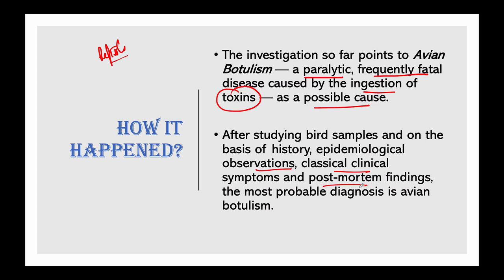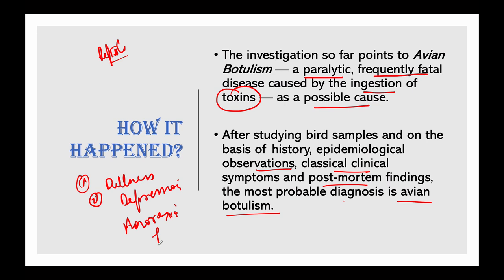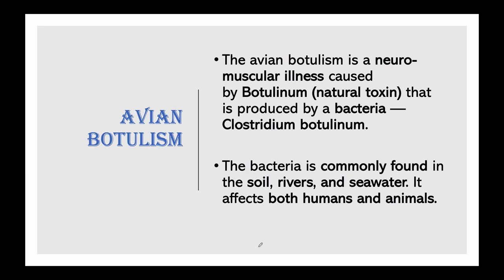The clinical signs exhibited by affected birds included dullness, depression, anorexia, and flaccid paralysis — particularly of the legs, wings, and neck, with the neck touching the ground. The birds were unable to walk, swim, or take flight. There was no rise in body temperature, no nasal discharge, no respiratory distress, or any other sign. This condition is known as avian botulism.